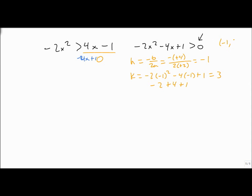So I get a point at minus 1, 3. That's my vertex. And notice that the 3 is positive, which is what I care about here.